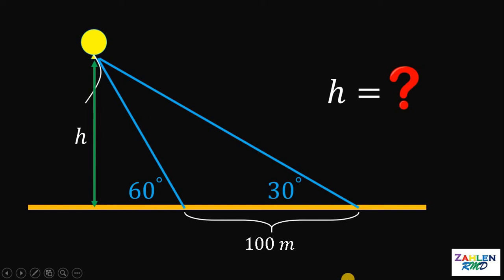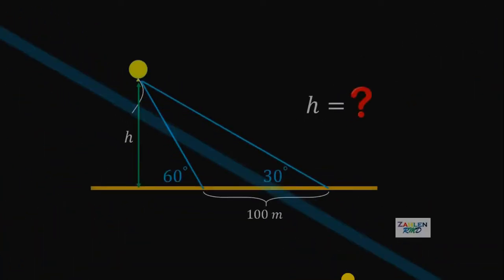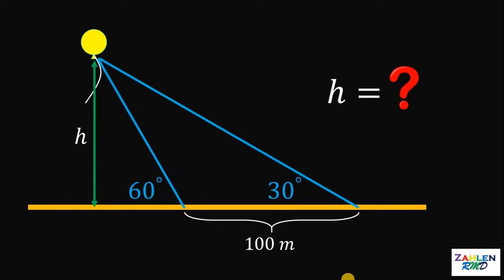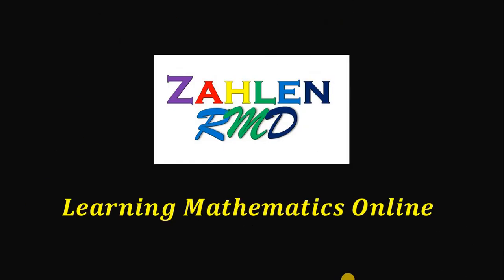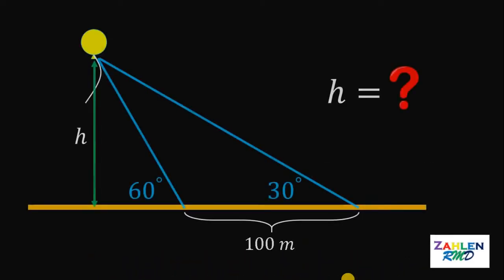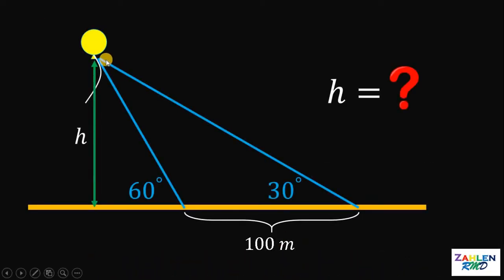Good day everyone, here's our math challenge for today. Given this figure, the balloon is above the ground at a certain distance, and the distance between these two points is 100 meters. The question is: how high is the balloon?